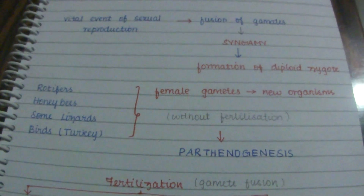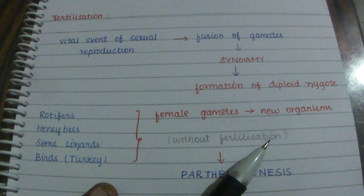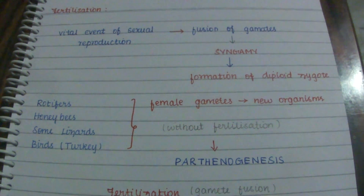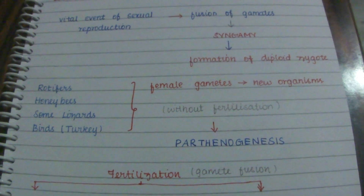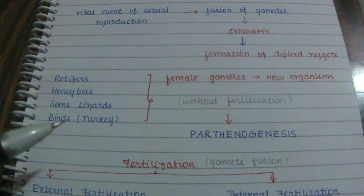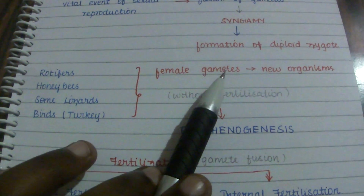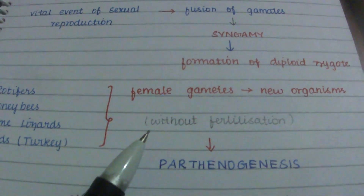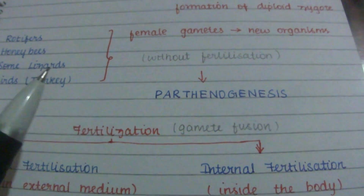Fertilization is not the only way an organism can reproduce. There are organisms in which a single gamete leads to the formation of a new organism without fertilization — for example, rotifers, honeybees, some kinds of lizards, and birds like turkey. In these organisms, the female gamete alone, without fertilization, forms the new organism. This process is called parthenogenesis.